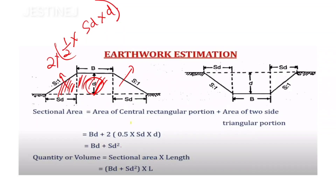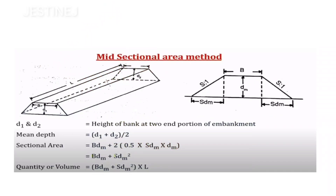Combining these, the sectional area equals bd + sd². The total earthwork quantity is then obtained by multiplying the sectional area by the total length of the road section.